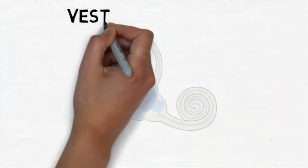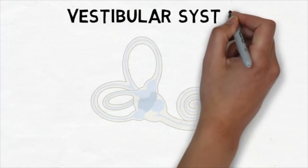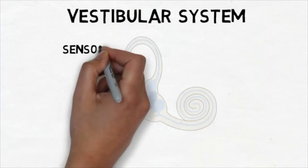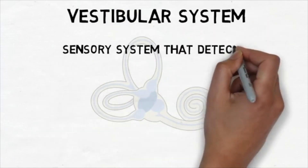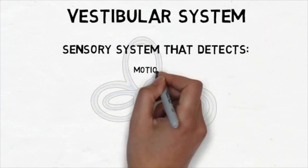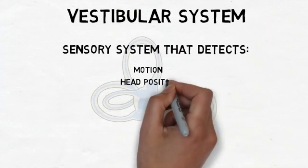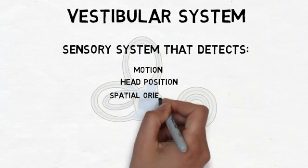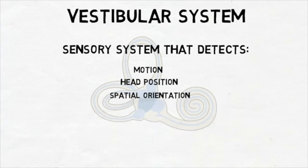The vestibular system is a sensory system responsible for providing our brain with information about motion, head position, and spatial orientation. It is also involved with motor functions that allow us to keep our balance, stabilize our head and body during movement, and maintain posture.